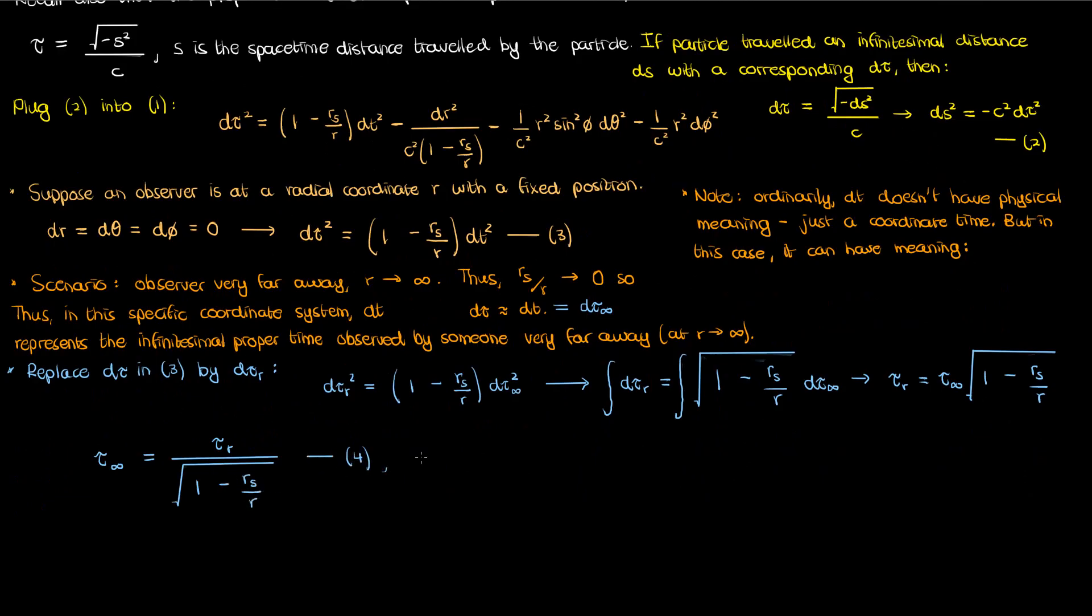And this equation, which I'll call equation 4, is my equation for gravitational time dilation in Schwarzschild geometry. It goes without saying that this equation is really only valid for values of r that are greater than r sub s, otherwise we'd be taking the square root of a negative number and would run into problems, but stay patient because I'll talk about situations where r is less than r sub s later on in this video.